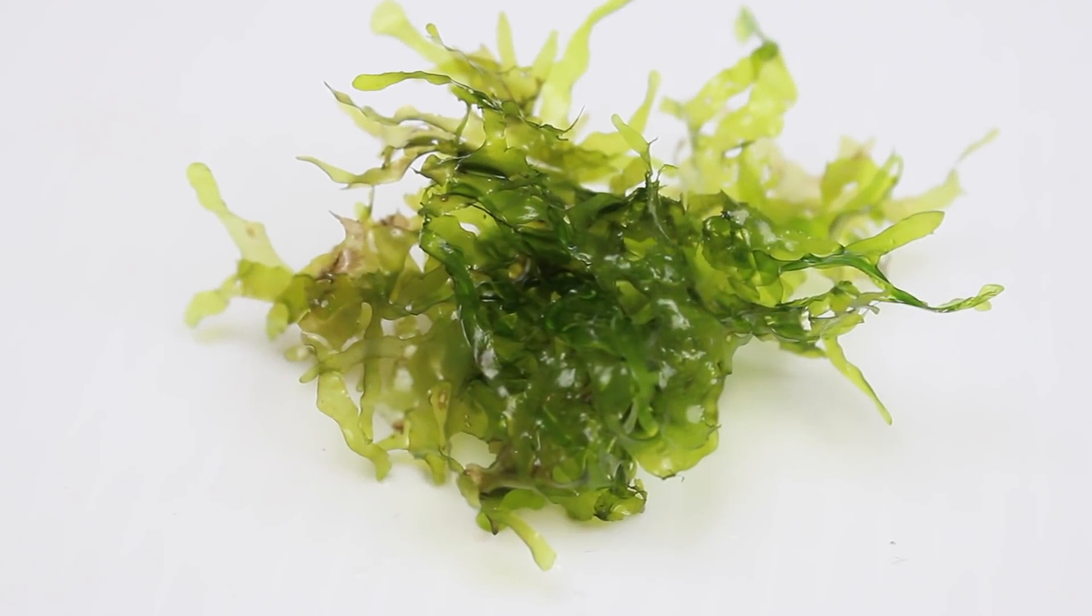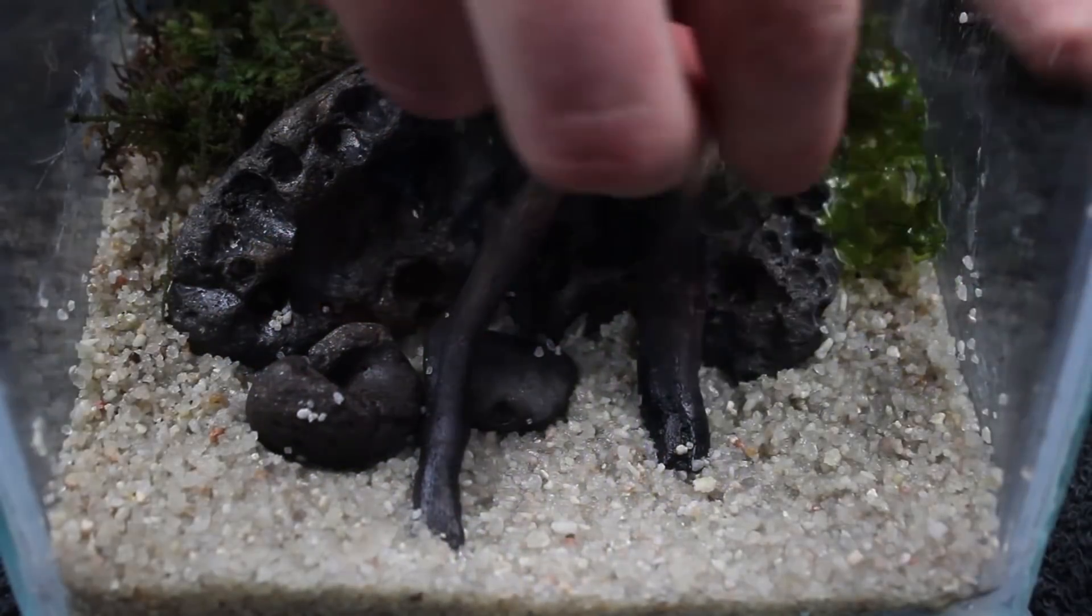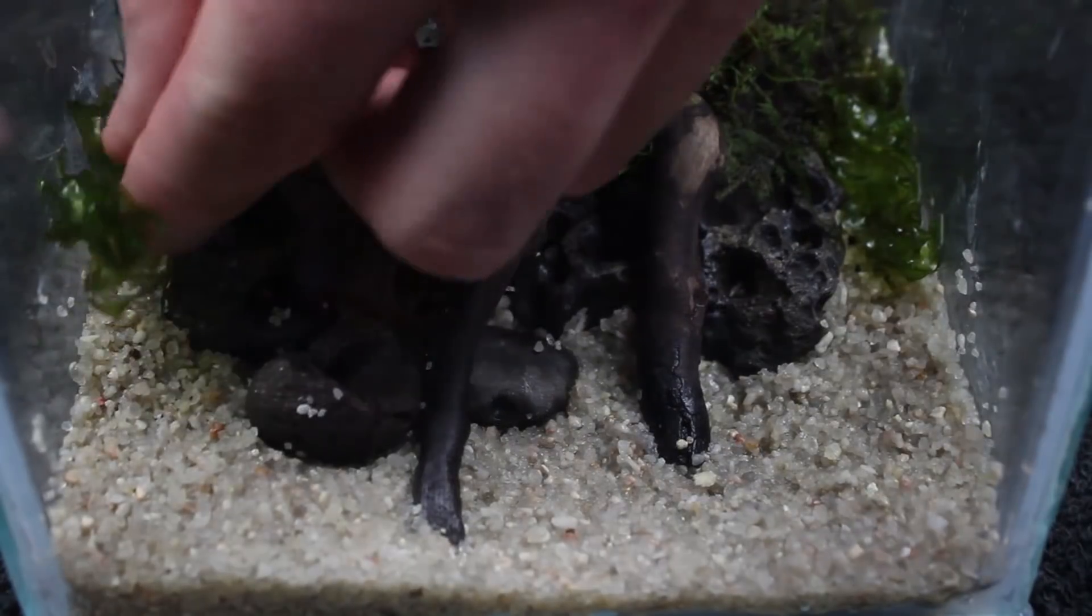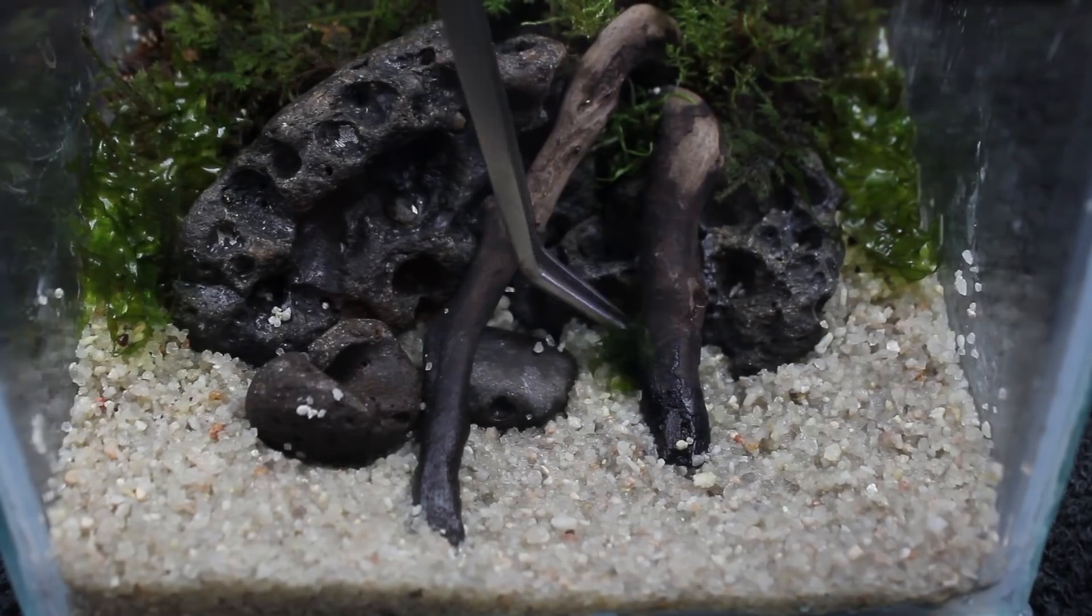Next up I've got some Subwassertang, which is essentially a type of liverwort. The more moisture this plant gets, the better it will do. So, I planted this in areas that will be completely submerged by water. I'm also using it as a way to better transition into the water area.